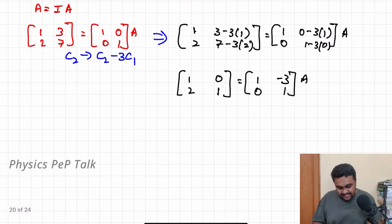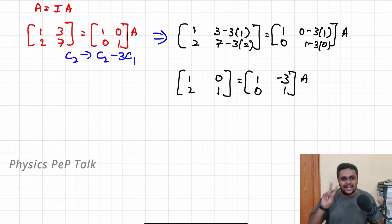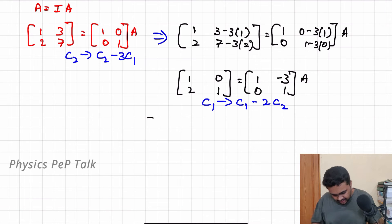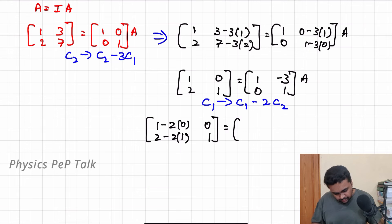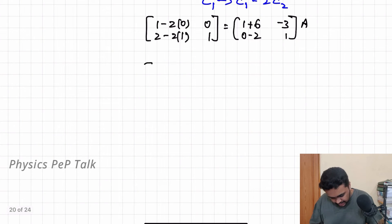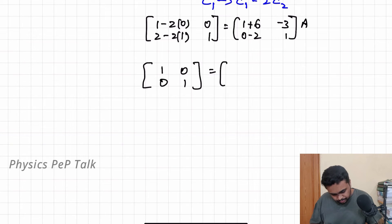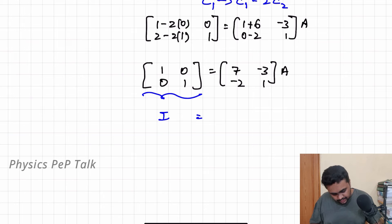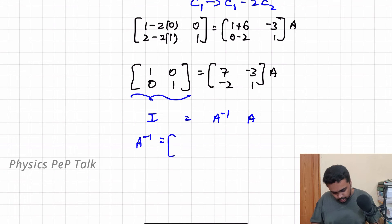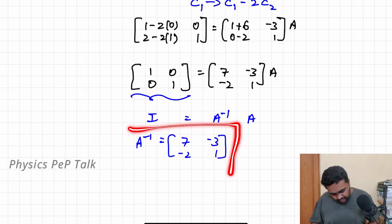The second step: this element is already 1, so directly transform C1 as C1 minus 2 times C2. Transformation: 1 minus 2 into 0 = 1, 2 minus 2 into 1 = 0. RHS column 1: 1 minus 2 into minus 3 = 7, 0 minus 2 into 1 = minus 2; column 2 as it is, minus 3 and 1 into A. LHS becomes [1, 0; 0, 1]. This is the identity matrix equal to [7, -3; -2, 1] into A. From this, A inverse equals [7, -3; -2, 1]. This is the required solution, easily scoring 3 marks.